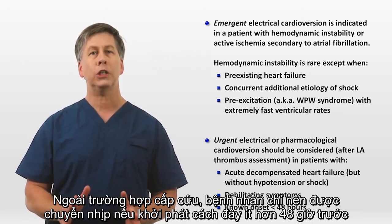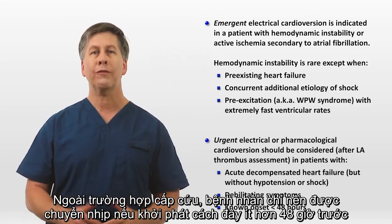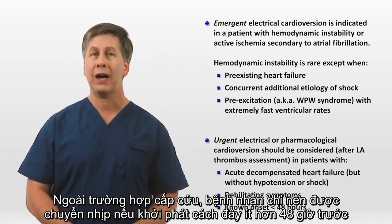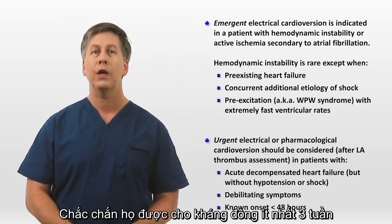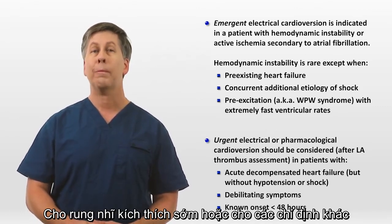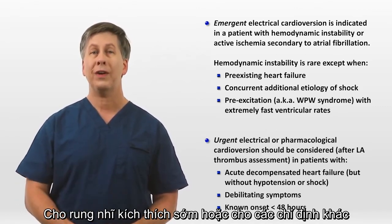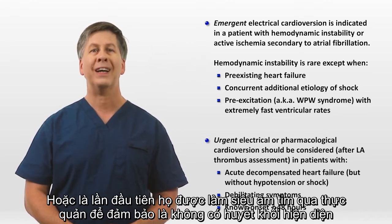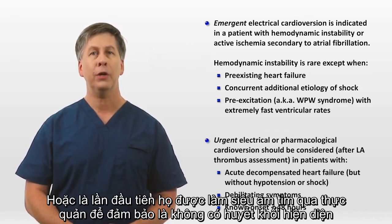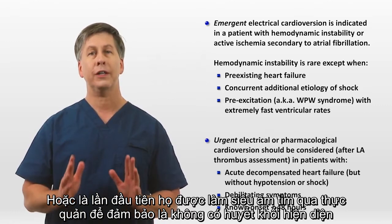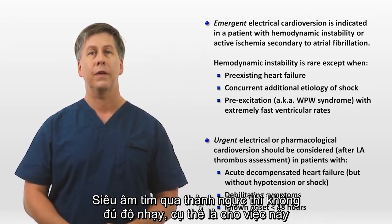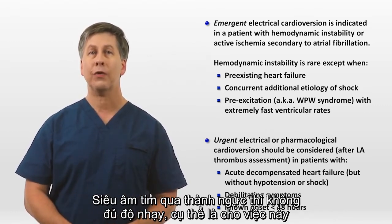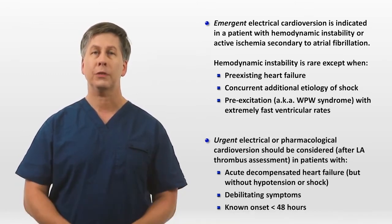Outside of emergencies, patients should only be cardioverted if the onset was less than 48 hours ago, they've been reliably anticoagulated for at least three weeks, or they first undergo a transesophageal echocardiogram to ensure no clot is present. A transthoracic echocardiogram is not sufficiently sensitive for this particular purpose.